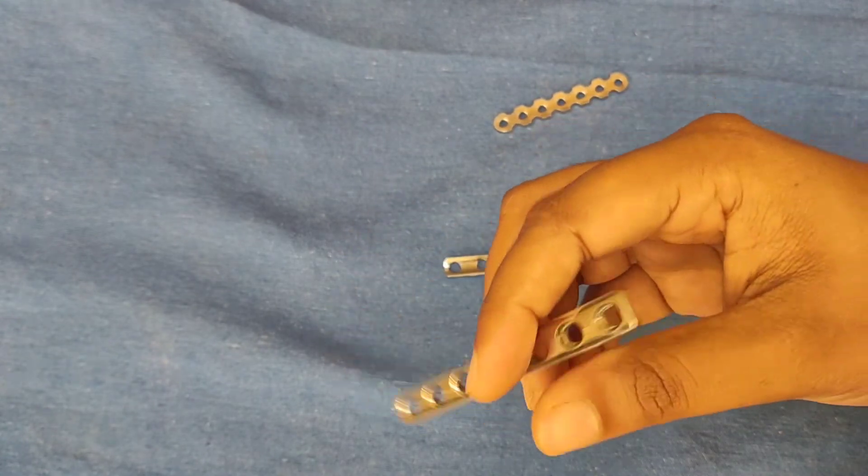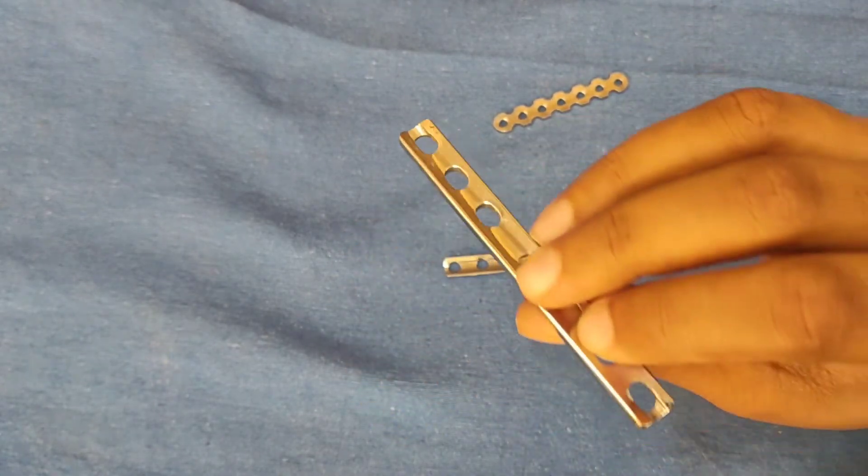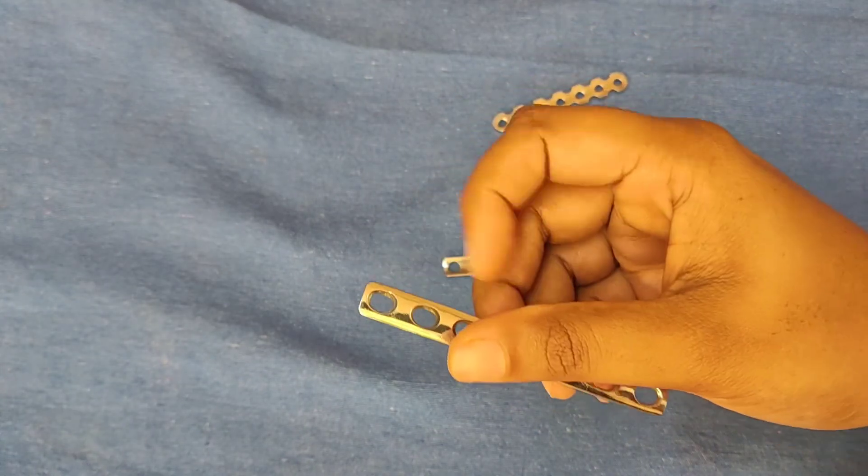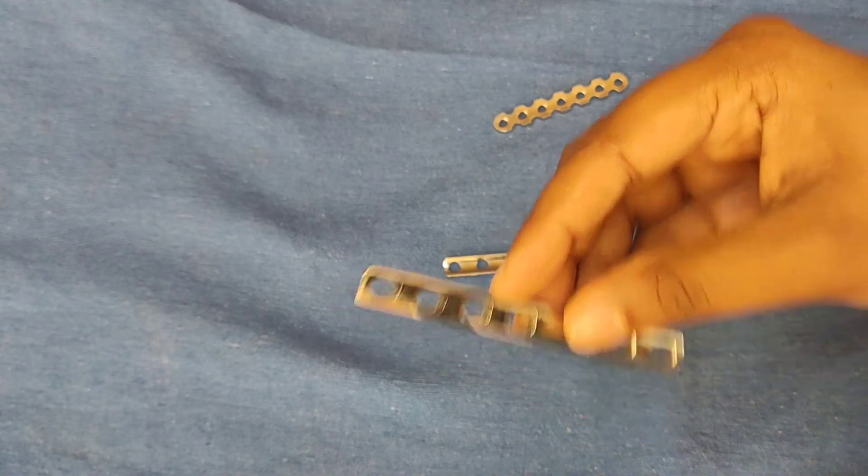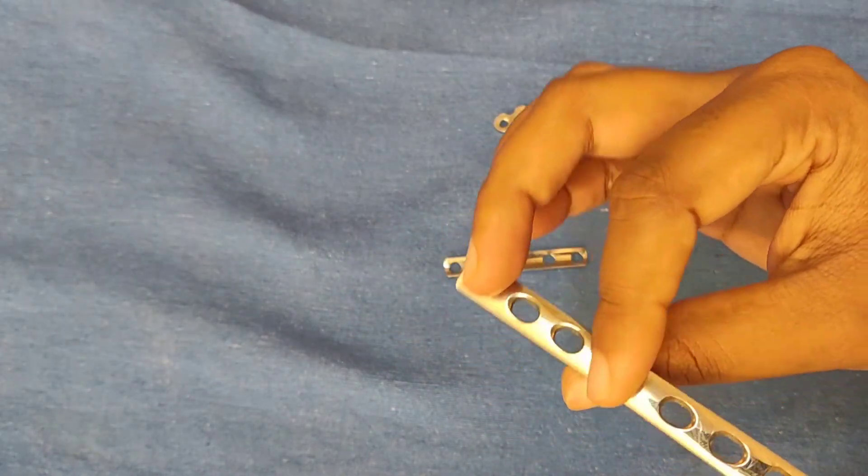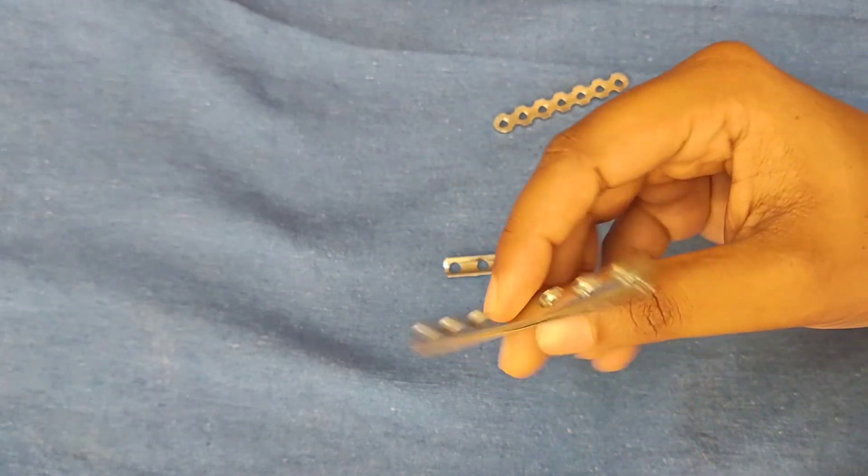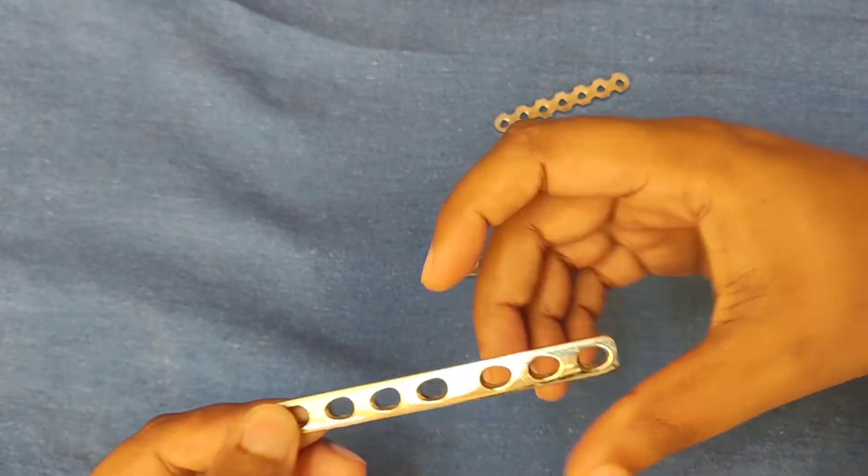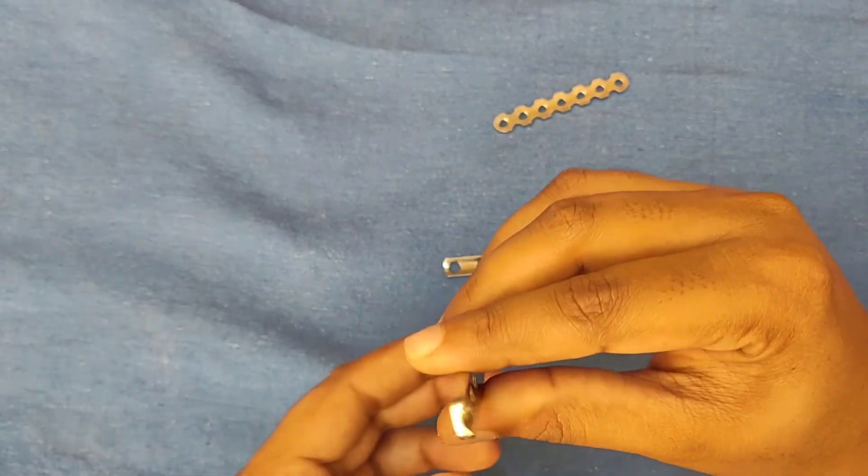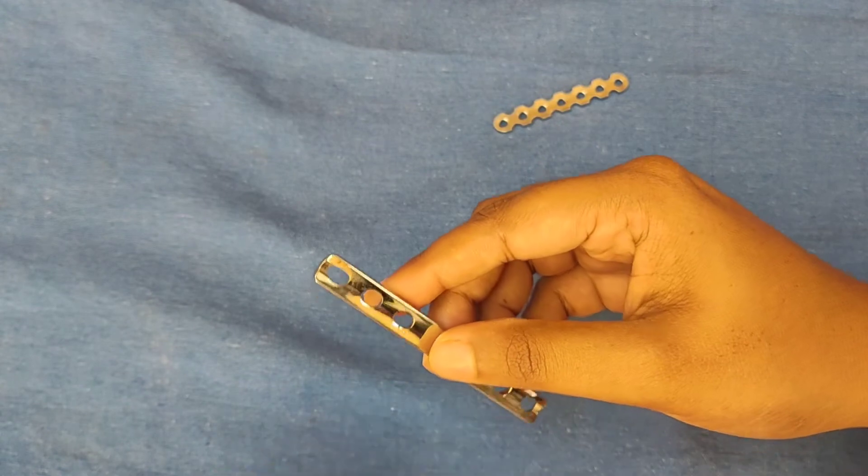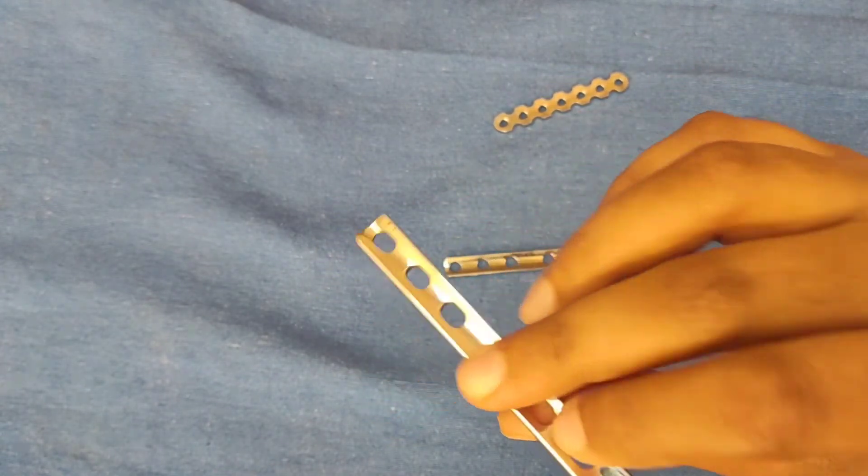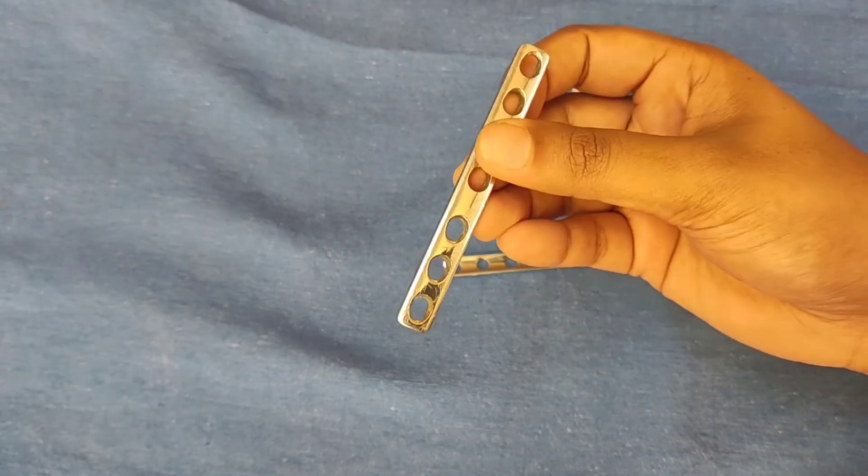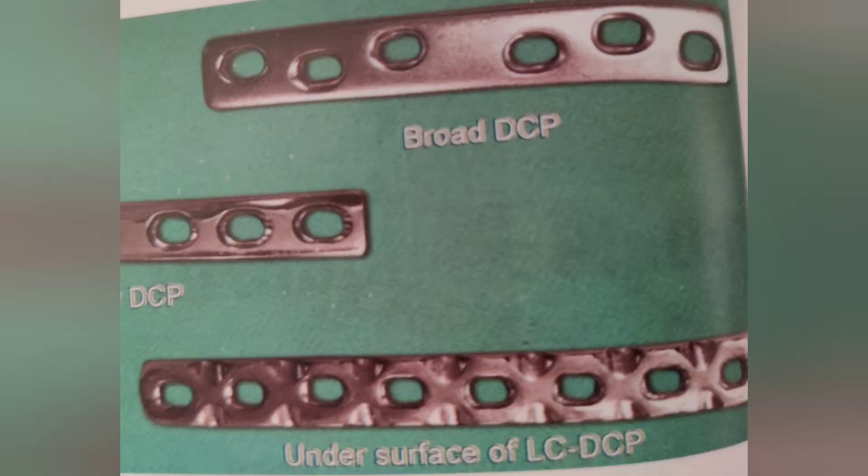An LCDCP or limited contact dynamic compression plate is a plate with undercuts and it has uneven hole distance and uneven distribution of bending force. It will minimally affect the blood supply of bone because it has an undercut and will not disturb the periosteal blood supply. The magnitude of compression will be more in an LCDCP than a DCP and bone ingrowth at the fracture site will be more in limited contact plate.